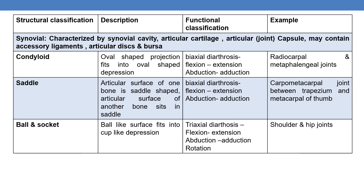The next type of synovial joint is the condyloid joint. Here, an oval-shaped projection fits into an oval-shaped depression. The condyloid joint allows biaxial diarthrosis — that is, flexion and extension, and abduction and adduction. Examples of condyloid joints are the radiocarpal and metacarpophalangeal joints.